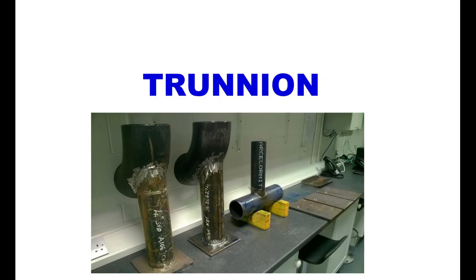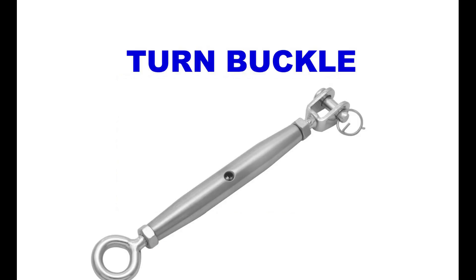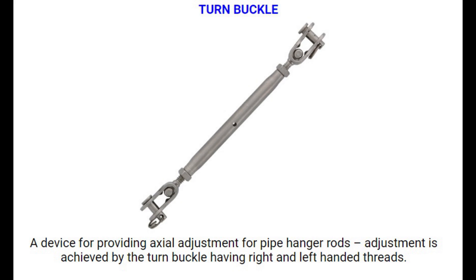Number 12: Trunyon. Trunyon is a tubular piece of steel welded to the side of a pipe to enable the pipe to be supported. Number 13: Turnbuckle. Turnbuckle is a device for providing axial adjustment for pipe hanger rods. Adjustment is achieved by the turnbuckle having right and left-handed threads.